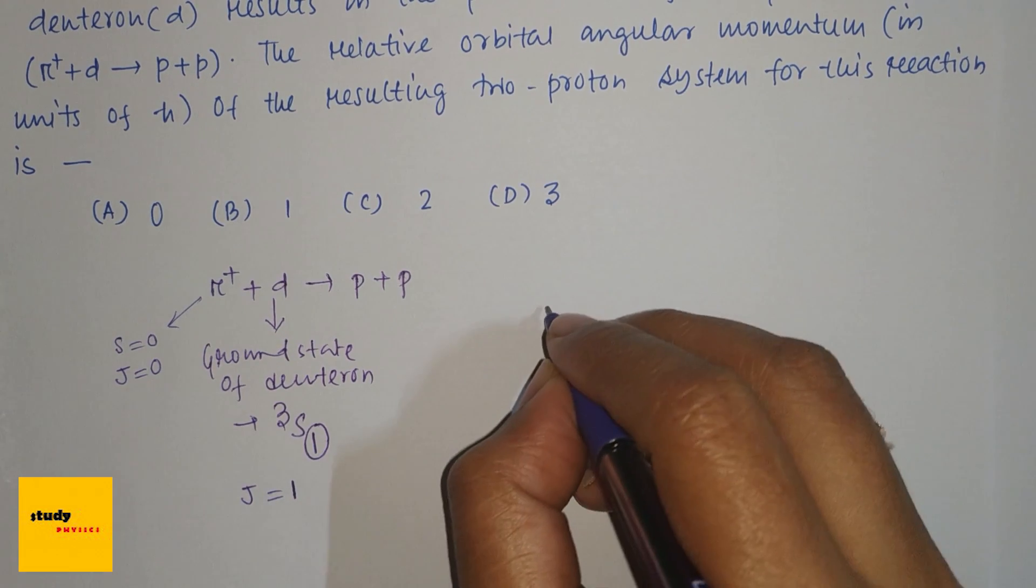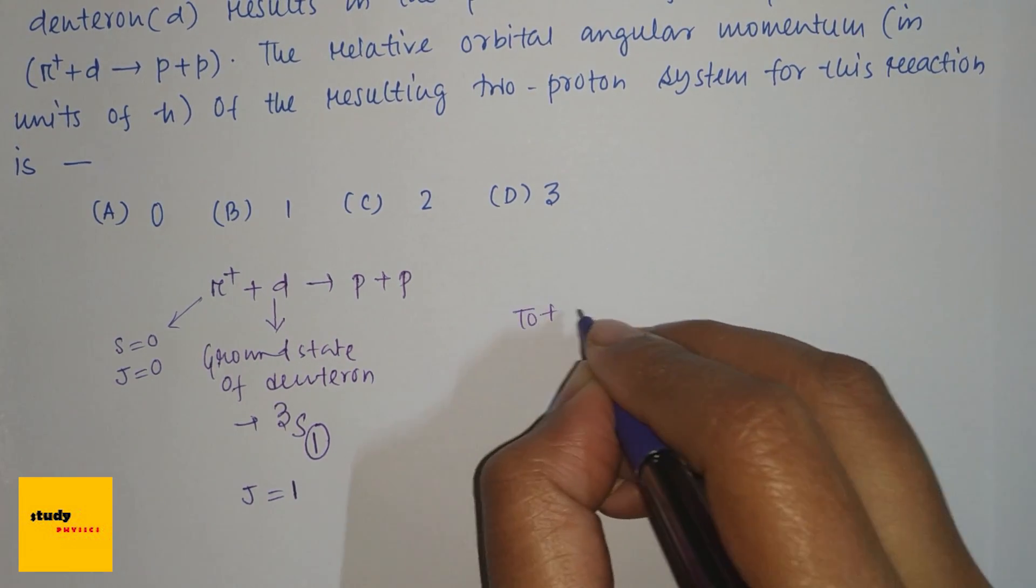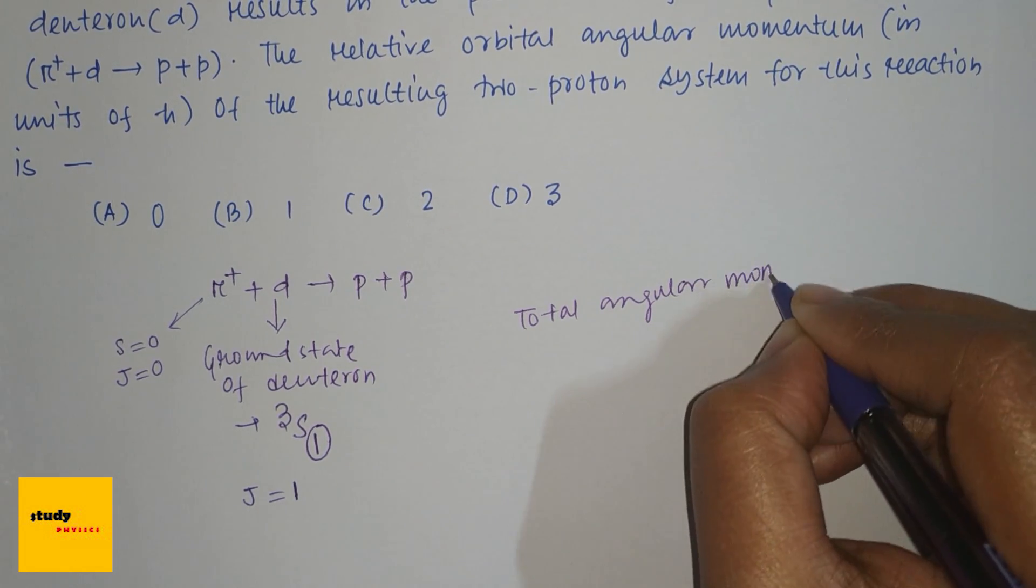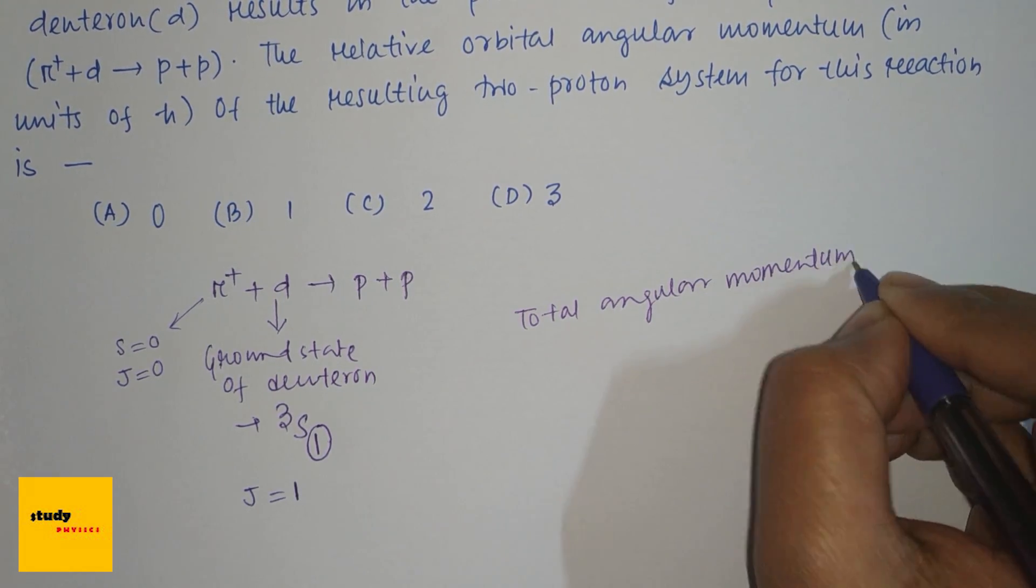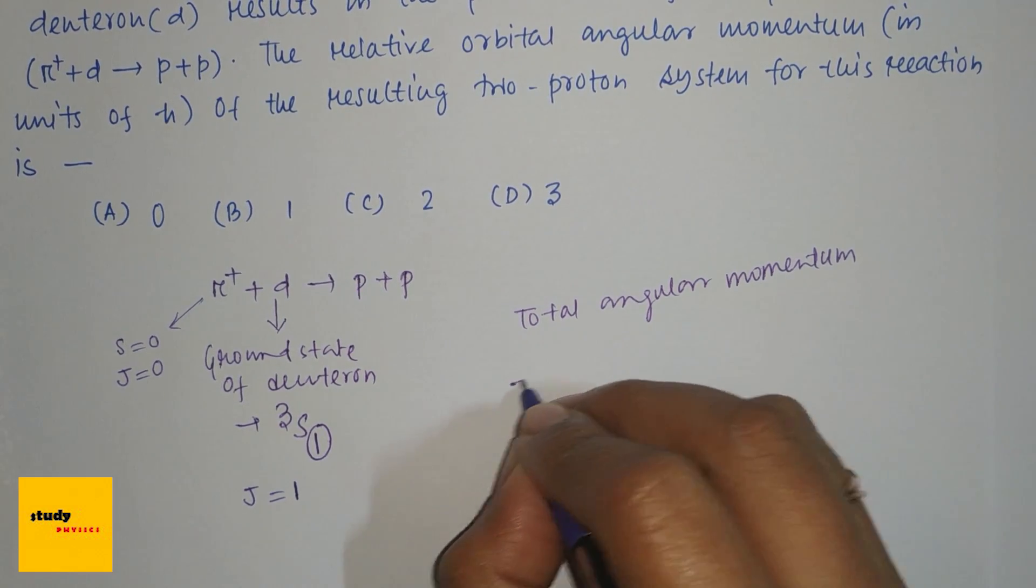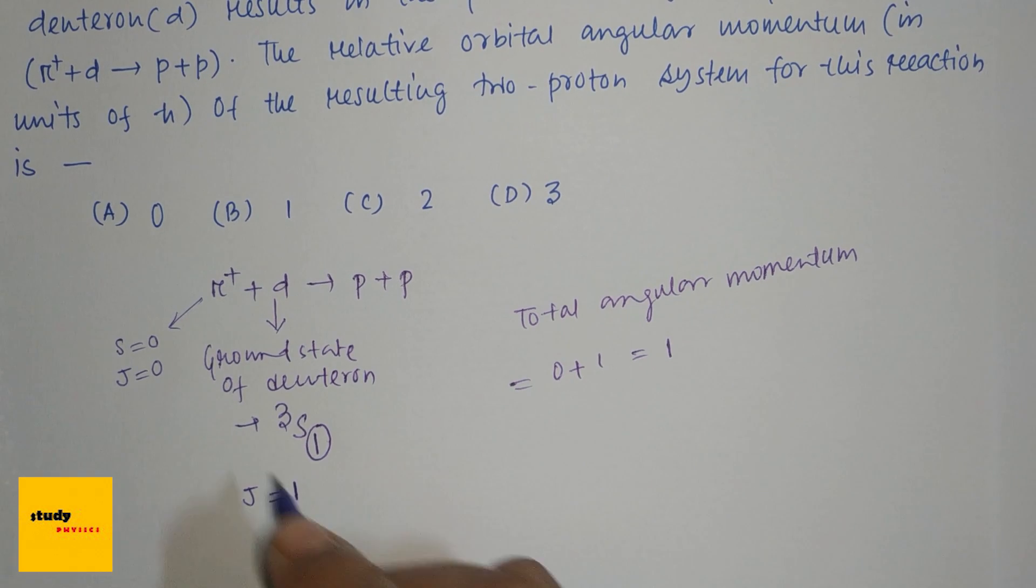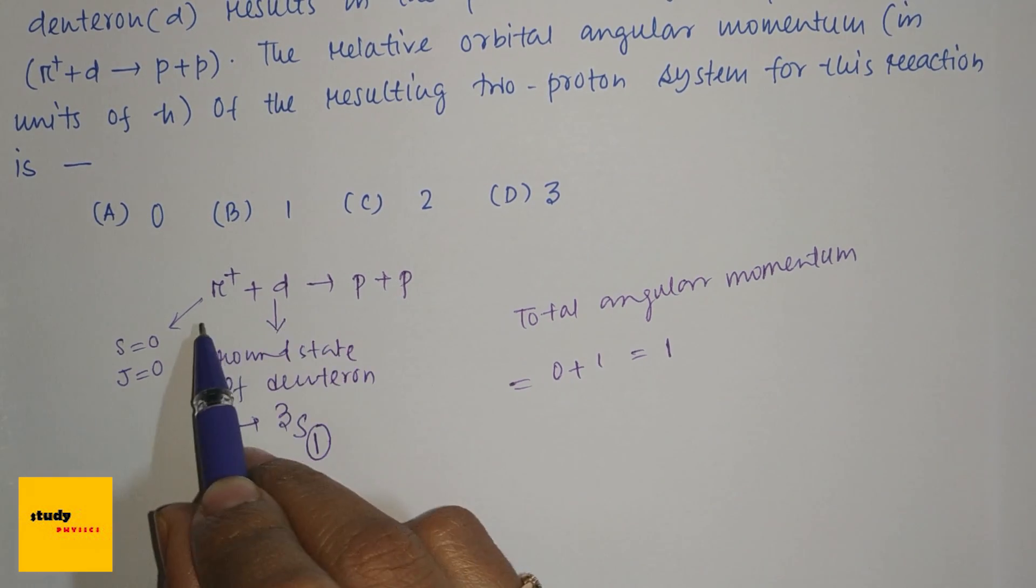So from the left side, for the left side, the total angular momentum is 0 + 1 which is 1. So due to conservation, the total relative angular momentum should be 1.